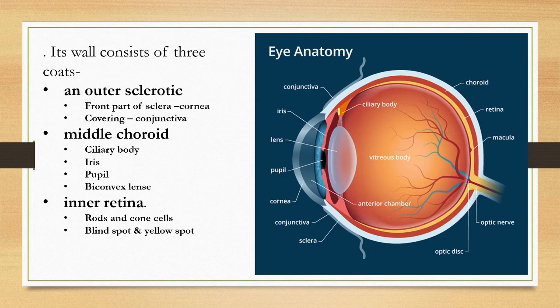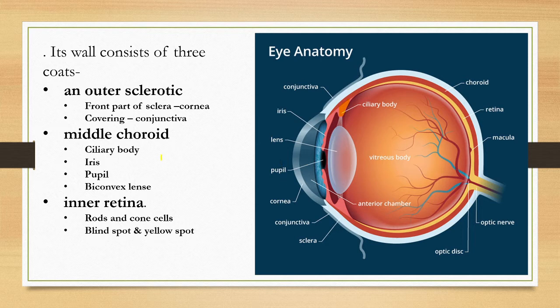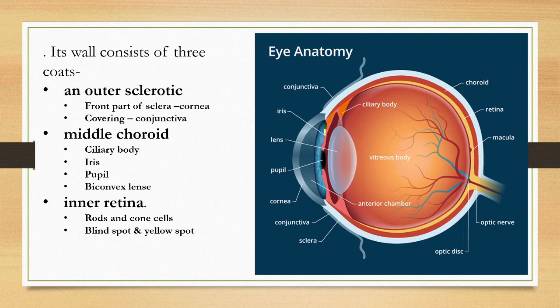Ciliary body contains ciliary muscles. Ciliary muscles help in contraction and relaxation, which alters the shape of the lens. In the ciliary body, there is a disc-like structure called the iris. This part is called the iris.